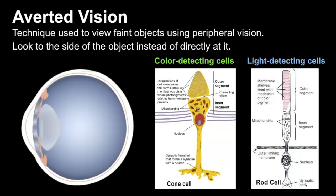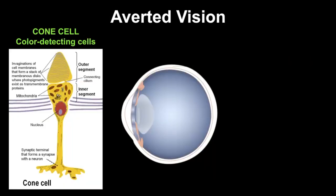Now let's take a look at the structure of the human eye in order to understand how averted vision works. You have two types of cells inside your eye. The first is called the cone cell — these are your color-detecting cells, and they are highly concentrated in the back center of the human retina. These cells are responsible for sharp, detailed vision in bright light as well as color vision.